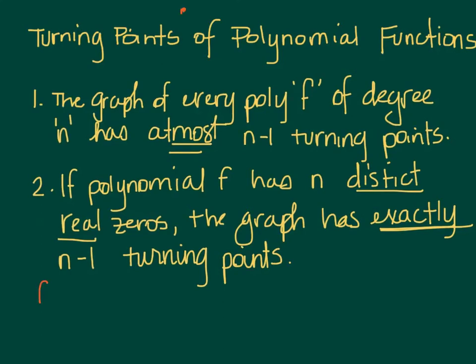And the second one is, if the polynomial function has n distinct real, which means it touches the x-axis zeros, the graph has exactly n-1 turning points. So for a quick example, if I had a function x squared minus 6x plus 7, I know that factors and gives me... No, it doesn't. I want this to be 8.